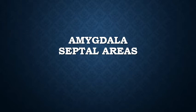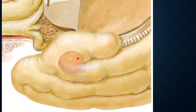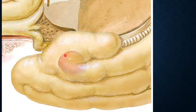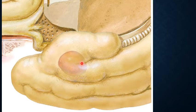The amygdala, or amygdaloid body, is a collection of gray matter in the shape of an almond. It is located in the temporal lobe, beneath the gyrus ambiens, gyrus semilunaris, and the uncinate gyrus. Beneath these three gyri we can identify this almond-shaped gray matter called the amygdala.